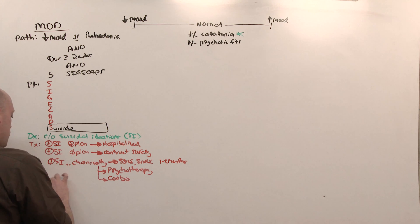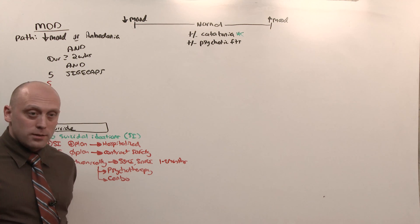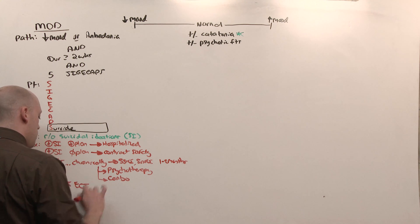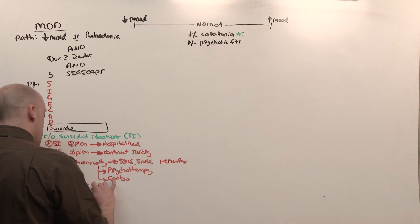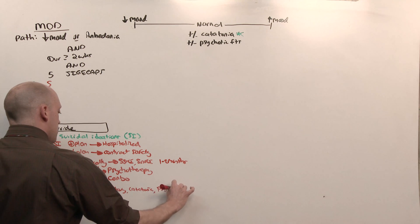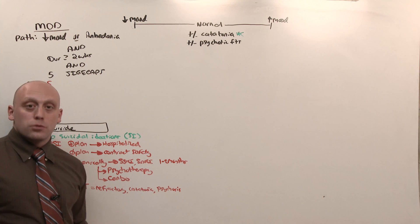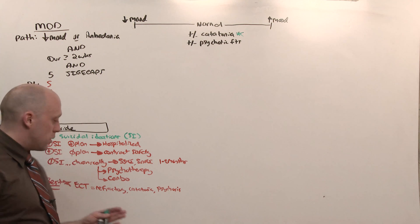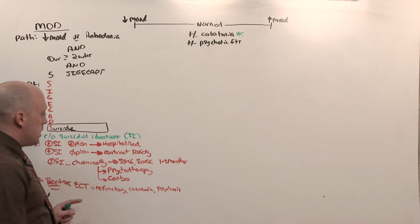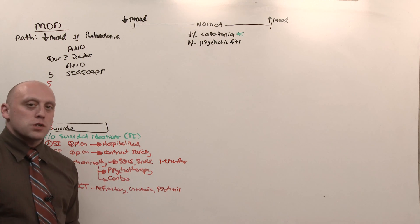But the best treatment, very rarely done because of its stigma - everyone sees Jack Nicholson getting his head shocked while he's awake - is electroconvulsive therapy. It is used in severe forms: refractory, catatonia, or psychosis. It causes amnesia. It looks brutal, but you sedate the person before you do it, so it doesn't hurt at all. It is the best, but has a stigma against it. And especially when you can do something as benign as simply start an SSRI and see how they do in a couple weeks, that's generally what patients prefer.